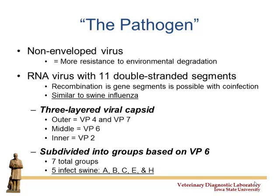The other thing that makes rotavirus very challenging is that it has 11 double-stranded RNA segments — they're all separate. Think of influenza, which has eight RNA segments. Rotavirus has 11, so they're all separate, which gives it the opportunity to potentially swap genetic material if they infect the same animal at the same time.